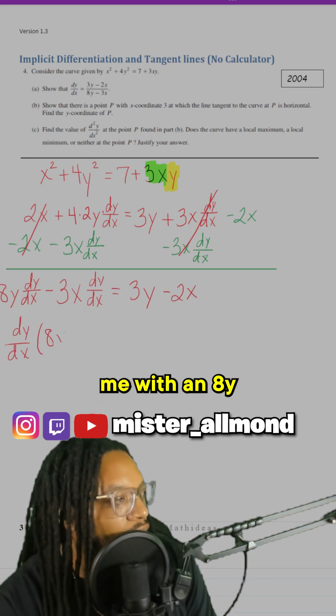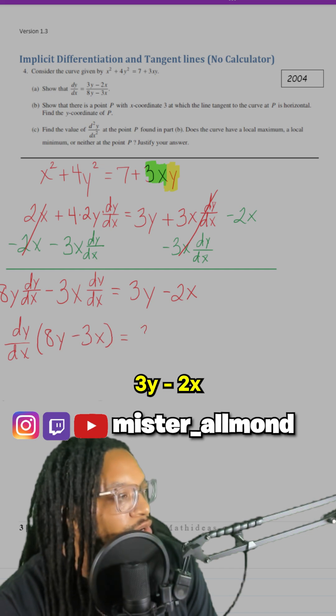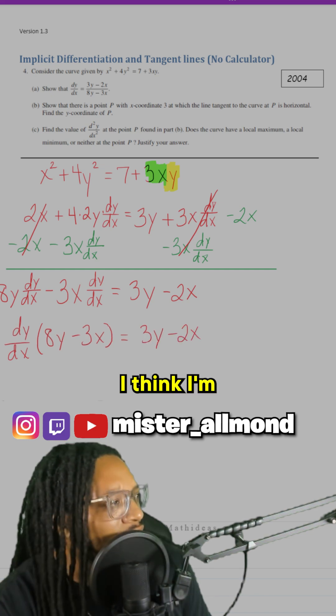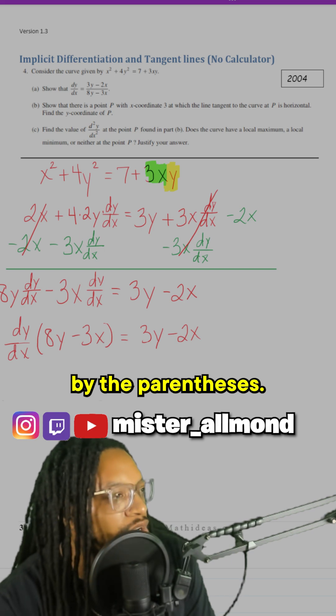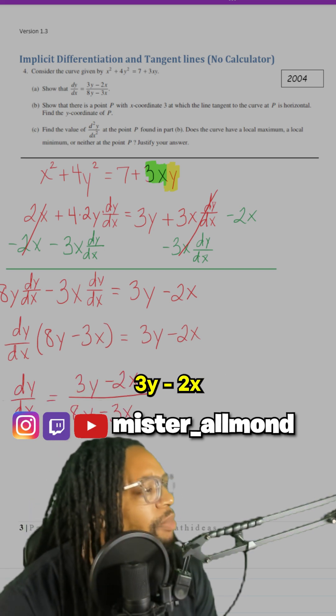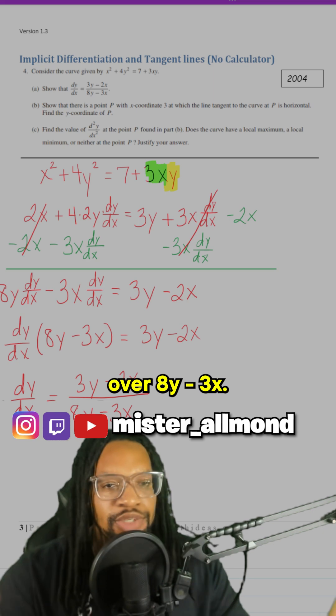That'll leave me with 8y minus 3x equals 3y minus 2x. I think I'm pretty much there. So to get dy/dx by itself, I got to divide by the parentheses. Is that what they wanted us to show? 3y minus 2x over 8y minus 3x. Perfect.